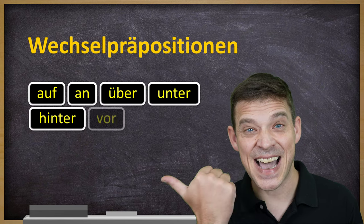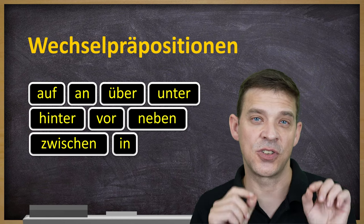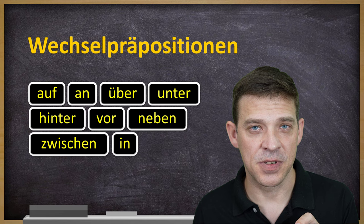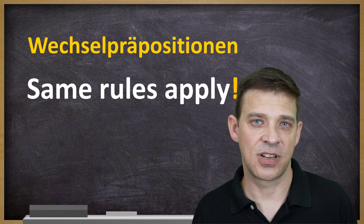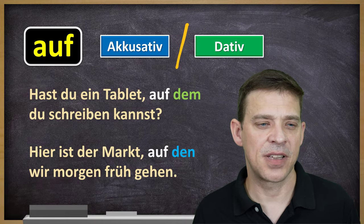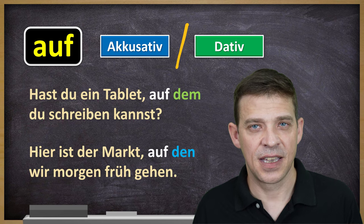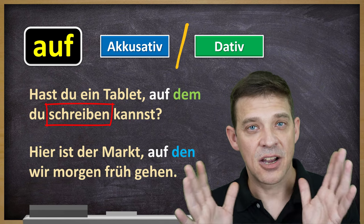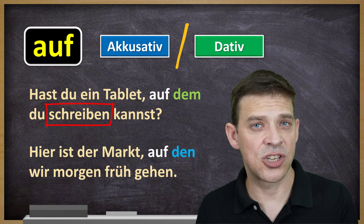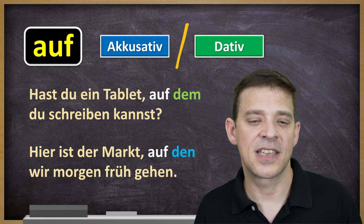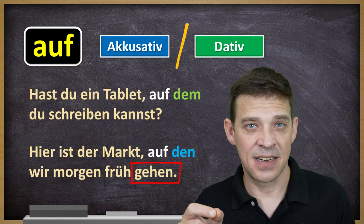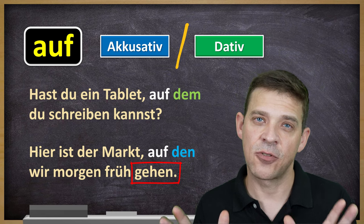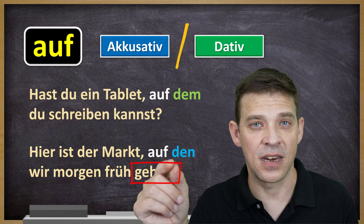Wechselpräpositionen — these nine prepositions are so-called two-way prepositions, and they follow certain rules. For relative clauses with prepositions, you have the same rules. Back to the example: Hast du ein Tablet, auf dem du schreiben kannst? This is dative — because you are writing something, you're not going from A to B, there is no movement involved. Therefore it is dative, answering the question wo? And the second example: Hier ist der Markt, auf den wir morgen früh gehen. Gehen is a movement — you go from A to B, probably from home to the market. Therefore you have to use Akkusativ, answering the question wohin, where to.